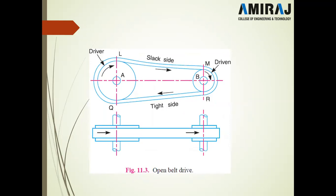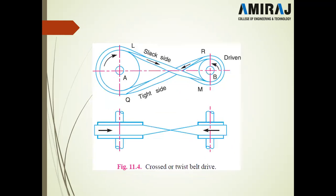In the open belt drive, two pulleys are used — one driver and one driven pulley. The bottom of the driver belt is wound to the bottom of the driven belt and the top of the driver belt is wound to the top of the driven belt. In the crossed or twist belt drive, the bottom of the driver belt is wound to the top of the driven, and the bottom of the driven belt is wound to the top of the driver.